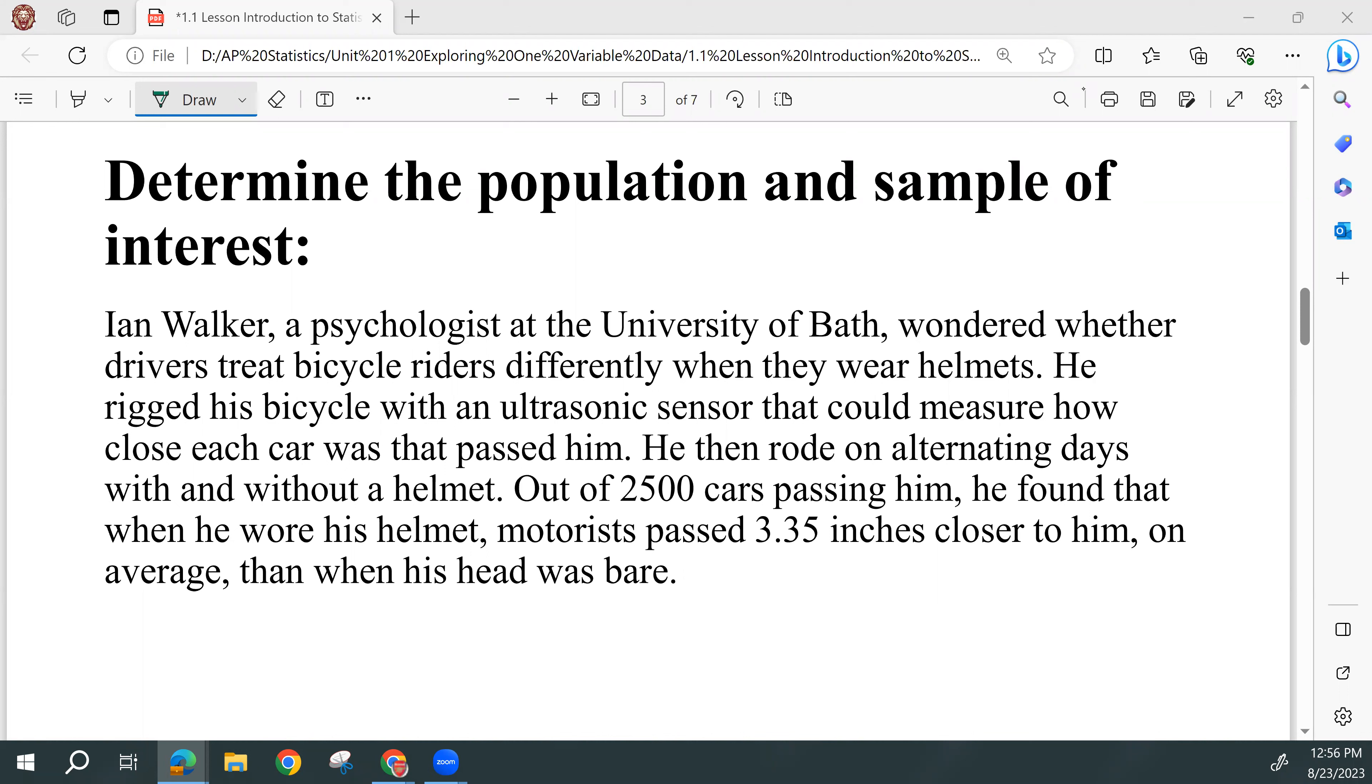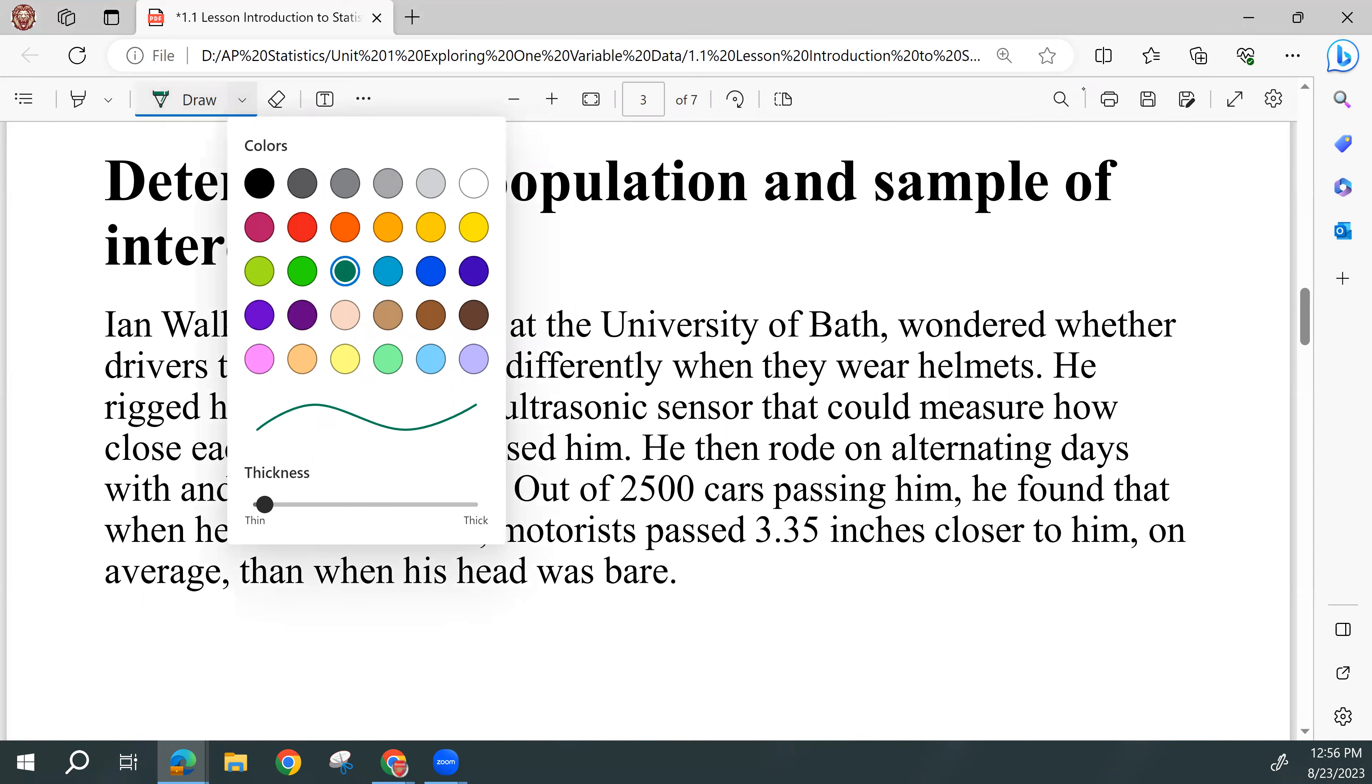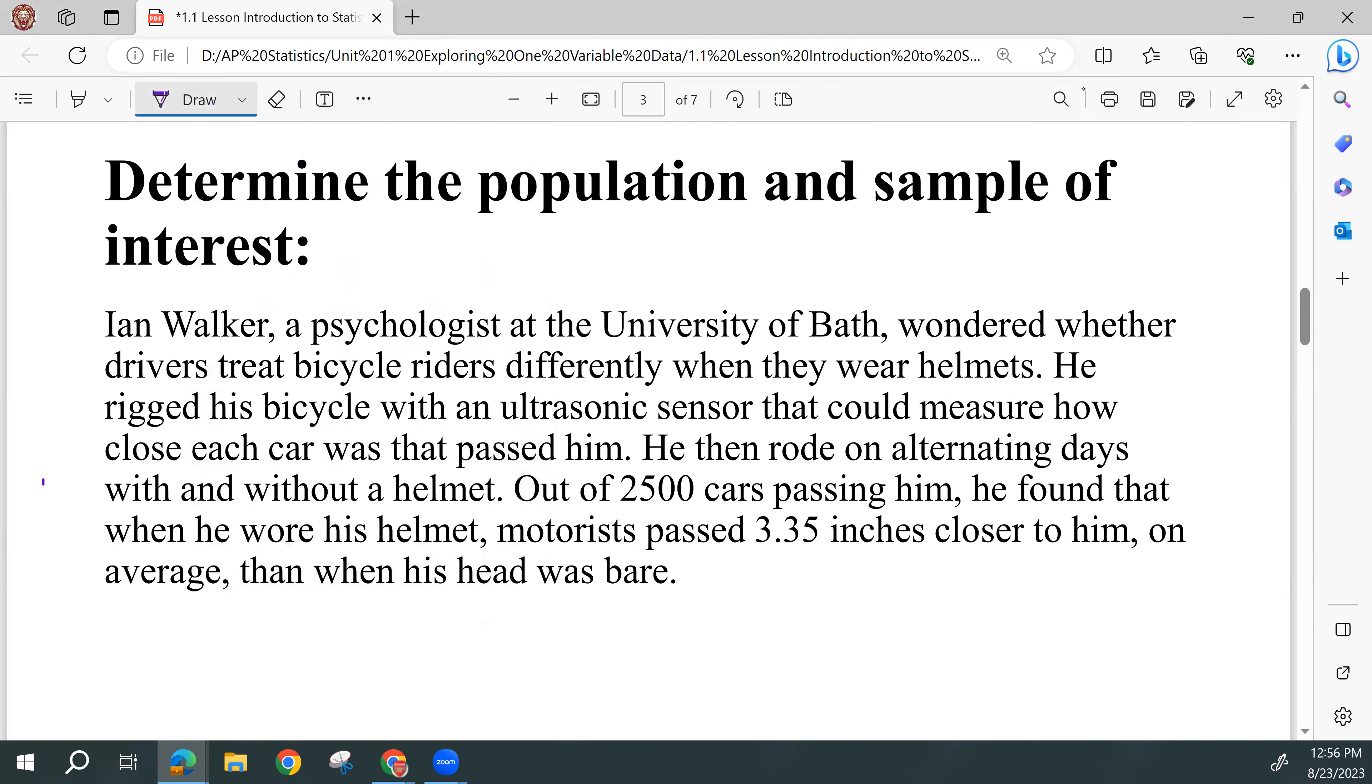Again, we're not usually going to be able to reach an entire population. So if we are documenting how many cars we watched pass by us, that 2,500 cars passing him is the sample that he took. And now we're watching these 2,500 cars on a certain roadway. It doesn't look like maybe he went to different roads.